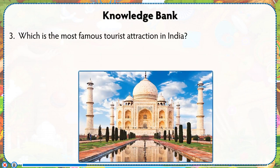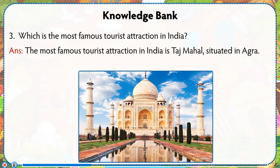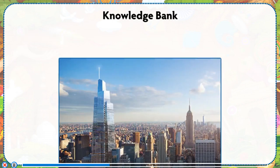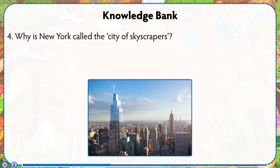Which is the most famous tourist attraction in India? The most famous tourist attraction in India is the Taj Mahal, situated in Agra. It was built by Mughal emperor Shah Jahan in the memory of his wife Mumtaz Mahal.